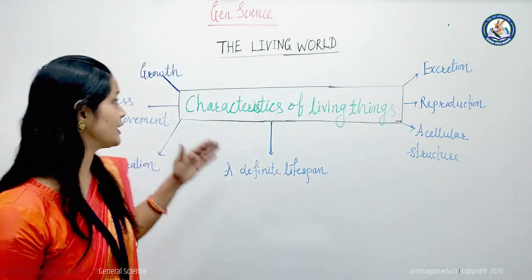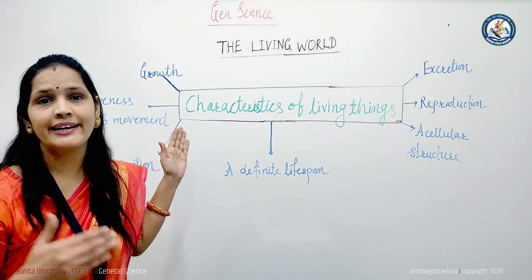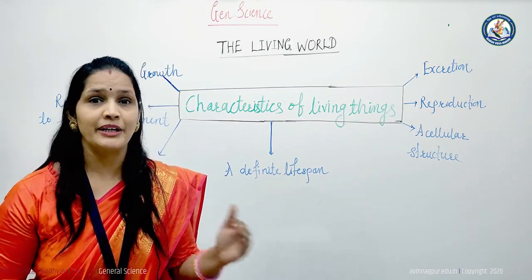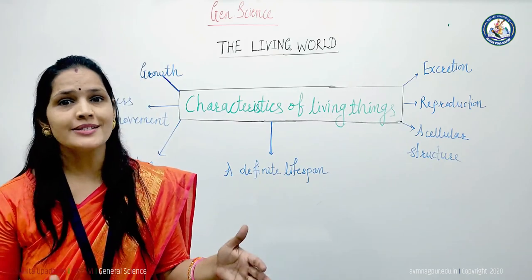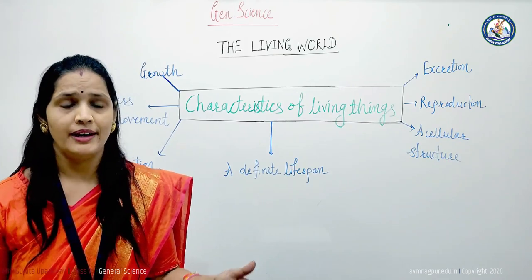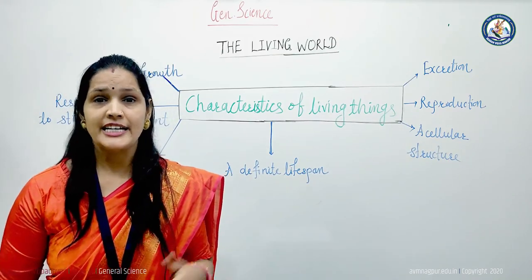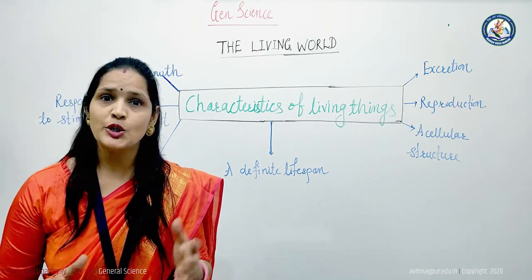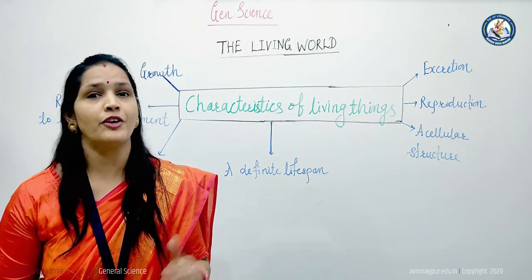The first characteristic is growth. Growth is the first characteristic of all living organisms. All living organisms can grow — a baby grows into a child, which grows into a man or woman. A little kitten grows into a cat, and a small plant grows into a big tree.